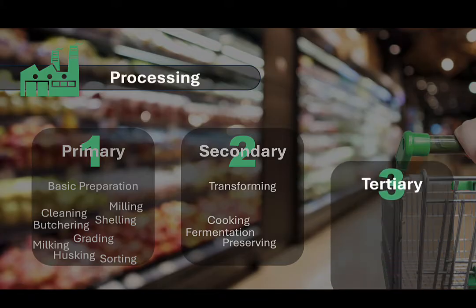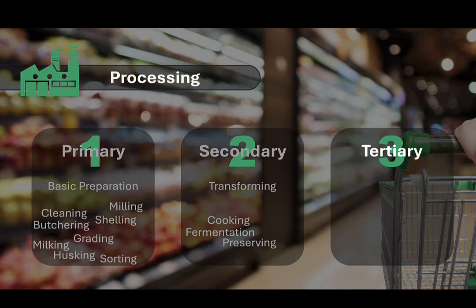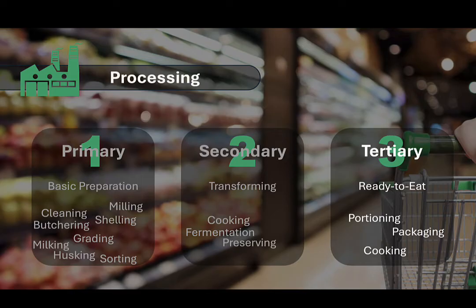Finally, tertiary food processing involves the production of ready-to-eat or ready-to-heat food products. This stage often focuses on convenience and value-added products that require minimal preparation by consumers. This can include cooking or pre-cooking meals so that they can be readily and quickly reheated, packaging finished products for retail sales, adding flavors, seasonings, and preservatives to enhance taste and shelf life, and portioning food into individual sizes for immediate consumption.